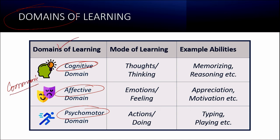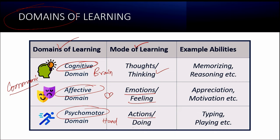There are three common domains of learning: the cognitive domain, affective domain and psychomotor domain. Basically, cognition deals with the brain, affective deals with the heart, and psychomotor deals with the hands — that is, performing an action. The cognitive domain is focused on thoughts or thinking, the affective domain is based on emotions or feeling, and the psychomotor domain is based on actions or doing or performing.